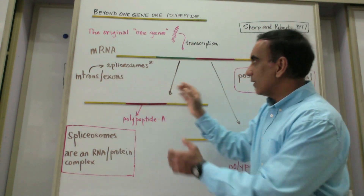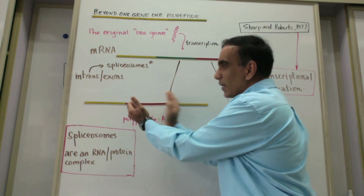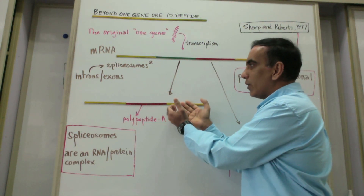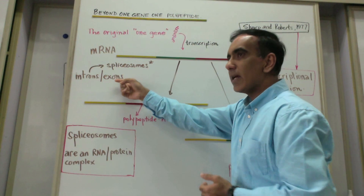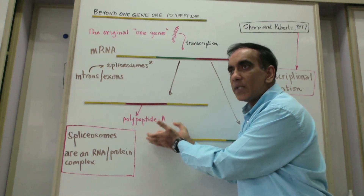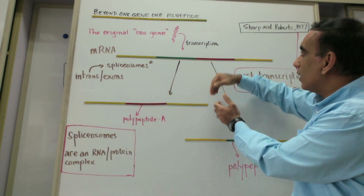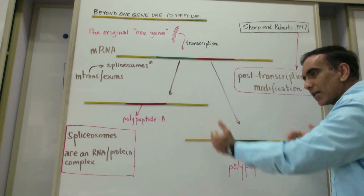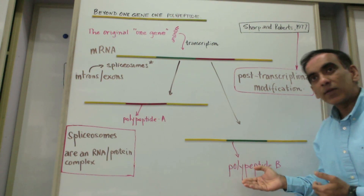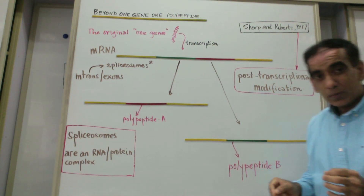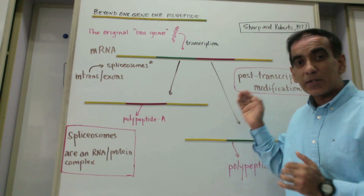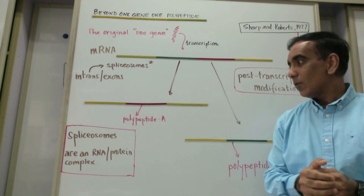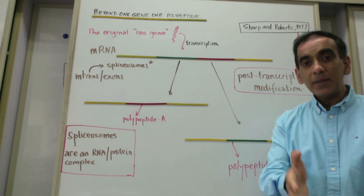By removing introns, spliceosomes leave a specialized piece of messenger RNA — an exon — which would then express itself and give rise to polypeptide A. Another splice, removing another intron, could leave a different exon to produce polypeptide B. With this kind of post-transcriptional modification proposed by Sharp and Roberts, we now realize that one gene can give rise to multiple polypeptides.